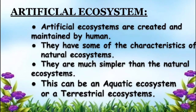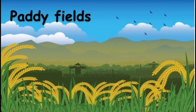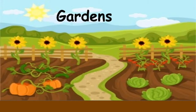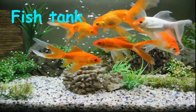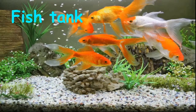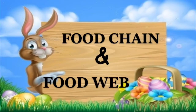Next, artificial ecosystem. Artificial ecosystems are created and maintained by humans. They have some of the characteristics of natural ecosystems and are much simpler than natural ecosystems. This can be an aquatic ecosystem or a terrestrial ecosystem. Paddy fields and gardens are examples of terrestrial ecosystem, and fish tank is an example of aquatic ecosystem.